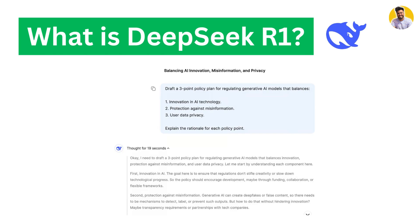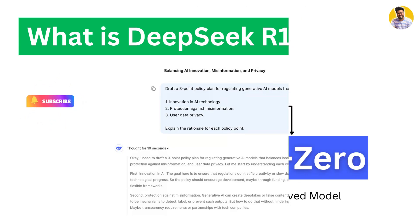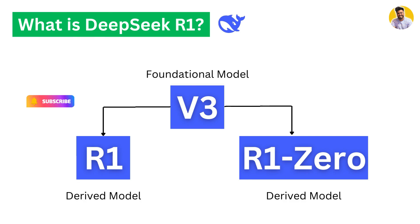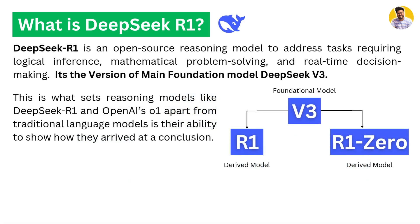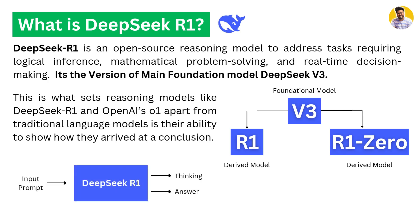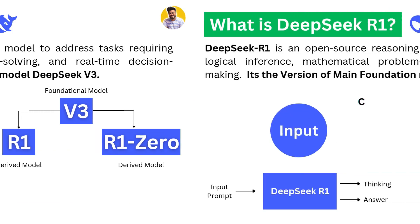If you don't know about DeepSeek R1 or the DeepSeek model — DeepSeek is a family of models derived from DeepSeek V3, which is the foundational model. DeepSeek R1 is used for logical reasoning and problem-solving tasks because it has reasoning abilities — thinking abilities — so it first thinks and then generates the answer.